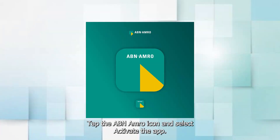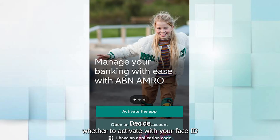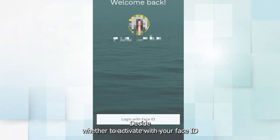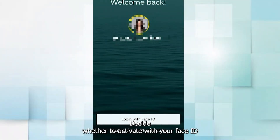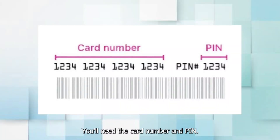Tap the ABN AMRO icon and select Activate the App. Decide whether to activate with your Face ID or with your identification code. Keep your card handy — you'll need the card number and PIN.